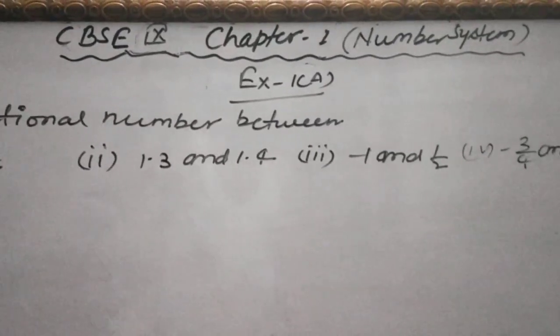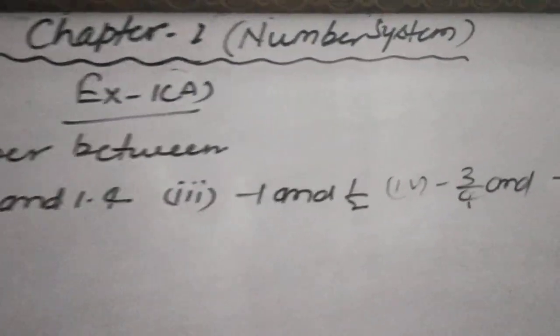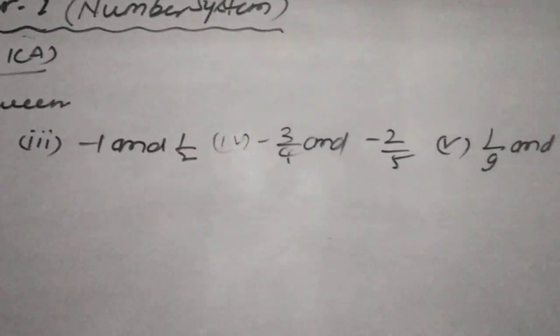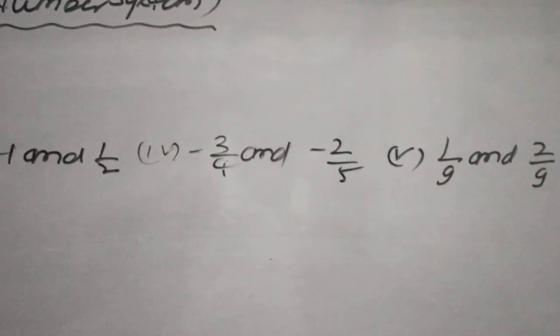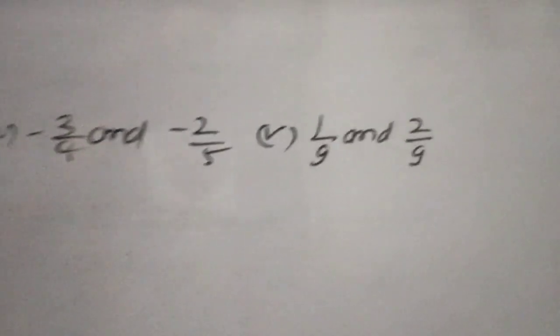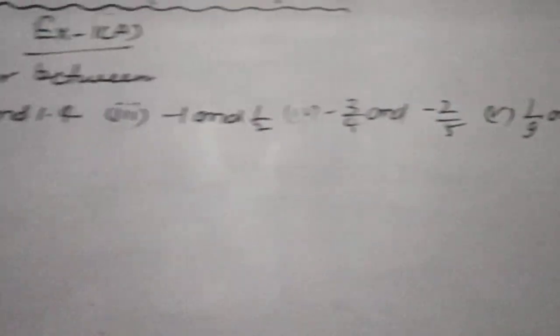Second point: 1.3 and 1.4. Third point: minus 1 and 1 upon 2. Fourth point: minus 3 upon 4 and minus 2 upon 5. Fifth point: 1 upon 9 and 2 upon 9.